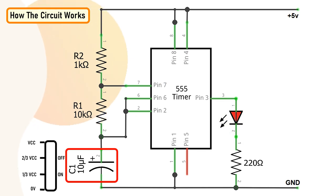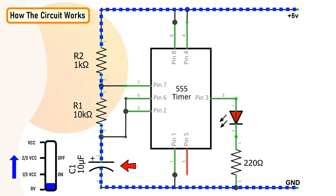At the same time, pin number 7 will internally disconnect from the ground and the capacitor C1 will start charging via the resistor R1 and R2. Once the voltage across the capacitor C1 crosses two third of the supply voltage, pin number 6 turns off the output.